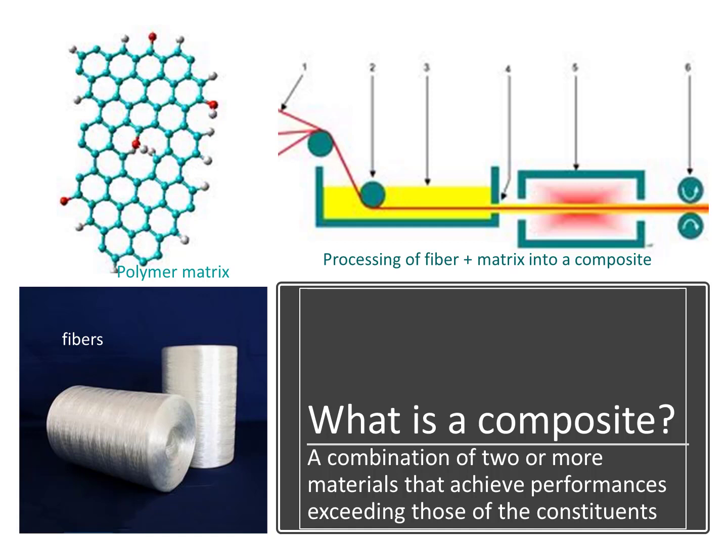A composite is a combination of two or more materials that achieve performances exceeding those of the constituents. Performances are measured by properties such as strength or durability and so on. Thus, a composite could be stronger than the matrix material yet be more durable than the fibers themselves. A composite that is optimized for stiffness and strength is said to be a structural material.